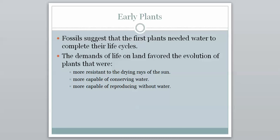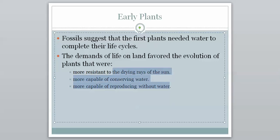Fossils suggest that the first plants needed water to complete their life cycles. The demands of life on land favored the evolution of plants that were more resistant to the drying rays of the sun, more capable of conserving water, and more capable of reproducing without water. Early plants were the ones that could take on these challenges — they could resist drying out, conserve water, and reproduce without water.